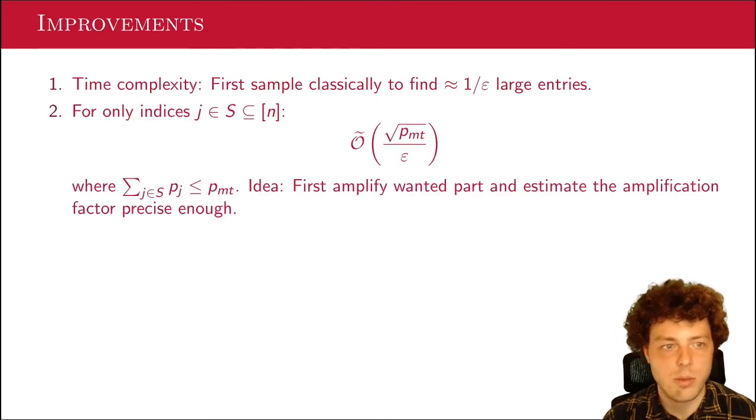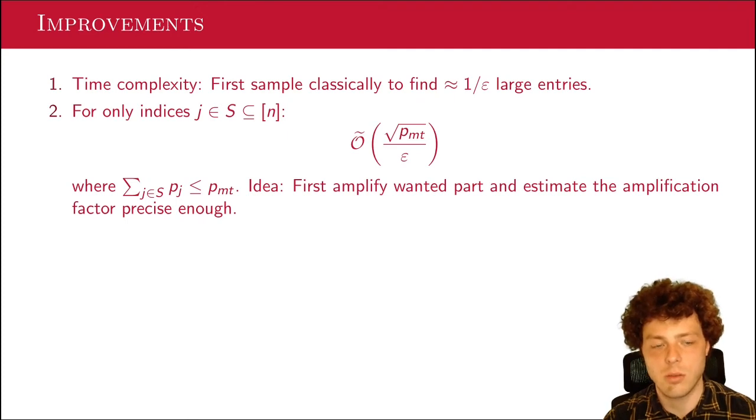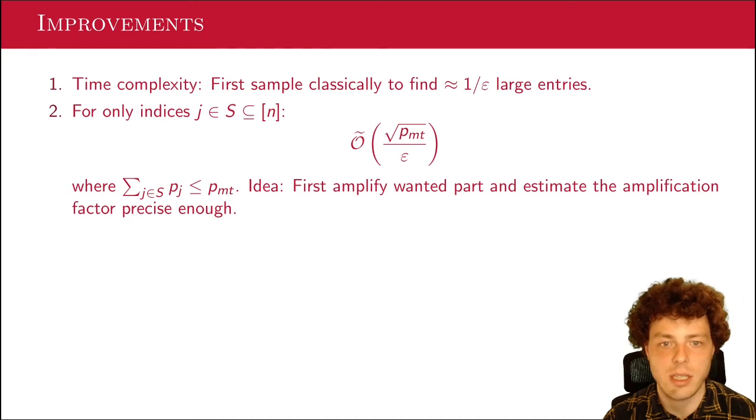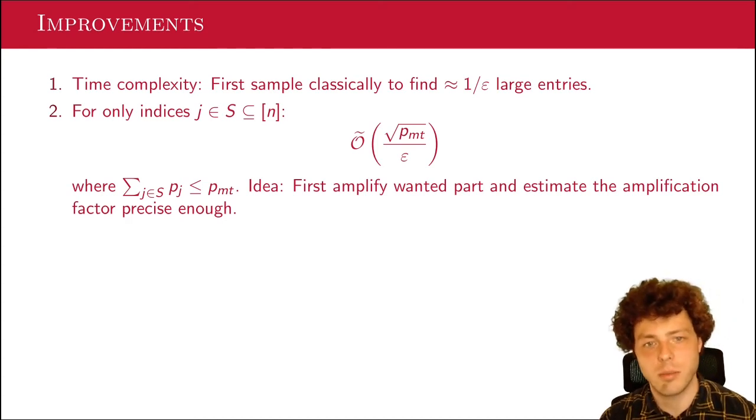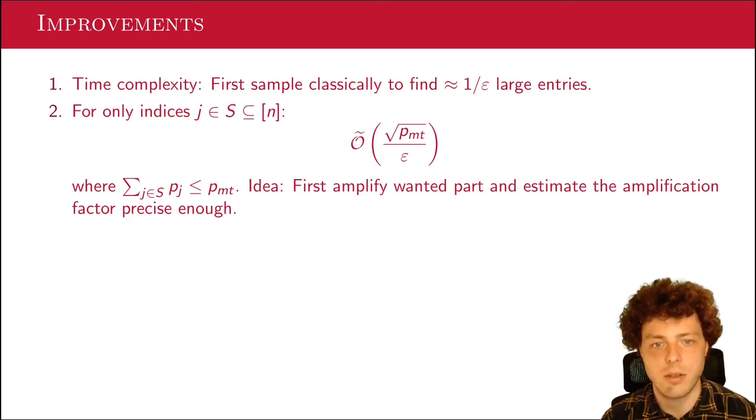The second case I looked at is a more specific case where we actually have only a subset of the indices that we care about. So there's some index set S of indices that we actually care about. And we have some bounds on the total probability of an index falling in S. So we have some P_max_total, P_MT, which is an upper bound on the total probability on our index set. And then we can actually improve from 1 over epsilon to square root of P_MT over epsilon. And the idea is to first amplify the part that we want. And there's, however, some caveats here that because you don't know the original amplitude of this part or the original norm of this part, if you amplify it, you don't know the exact factor that you use to amplify this. So you need to estimate that as well, but then you need to be precise enough in that.